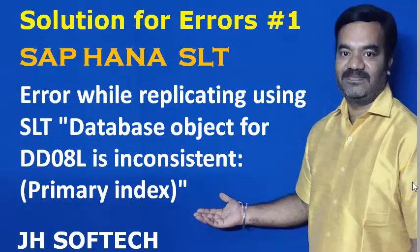Hello everyone, I am Vikram Aditya and welcome to Jetsoftech. Let's have a quick video on the solution for errors. Every day I'll be making a video on a solution for a particular error. Today I'm discussing SAP HANA SLT. The error is: error while replicating using SLT - database object for DD08L is inconsistent, the primary index is missing. So how to solve this issue is what I'll be discussing in this short video.